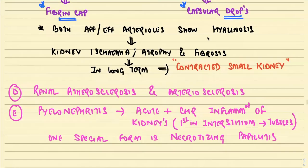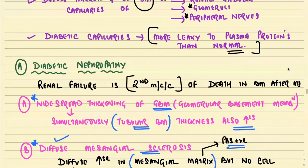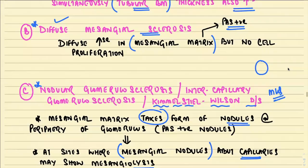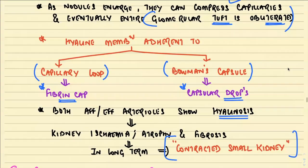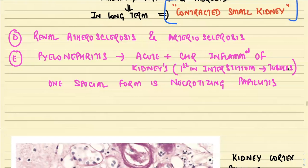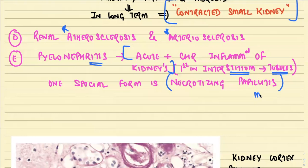Both afferent and efferent arterioles show hyalinosis. Ultimately because of all these changes, the kidney becomes ischemic, atrophic, and there will be fibrosis; in the long term it becomes a small contracted kidney. Large renal vessels also undergo renal atherosclerosis and arteriosclerosis. Because immunity is reduced, patients have pyelonephritis — acute and chronic inflammation of the kidneys, starting in the interstitium then spreading to the tubules. A special form of pyelonephritis seen in diabetics is necrotizing papillitis.